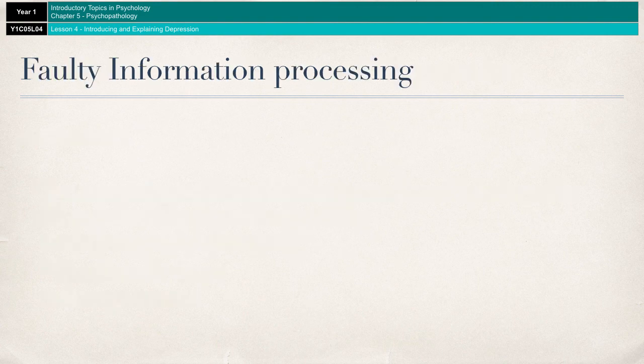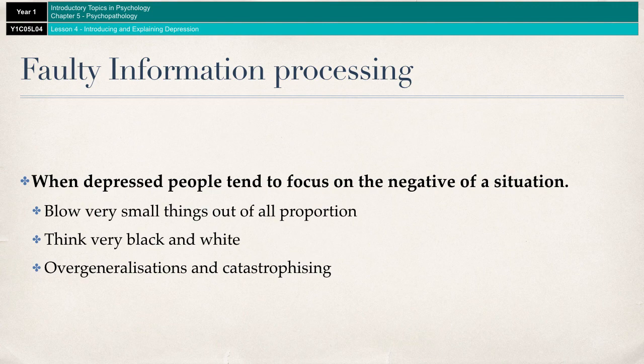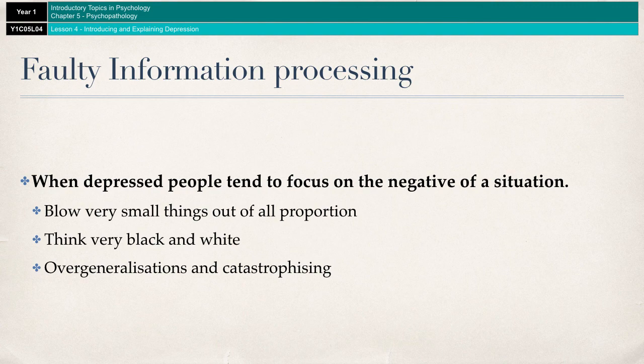Faulty information processing: Beck found that depressed people are more likely to focus on the negative aspects of a situation whilst ignoring the positives. They distort information in a process known as cognitive bias. Beck detailed numerous cognitive biases; two of the more common ones are overgeneralizations and catastrophizing. For example, somebody with depression may make overgeneralizations — making a sweeping conclusion based on one single incident, such as 'I failed one of my end-of-unit tests, therefore I'm going to fail all of my A-level exams.'